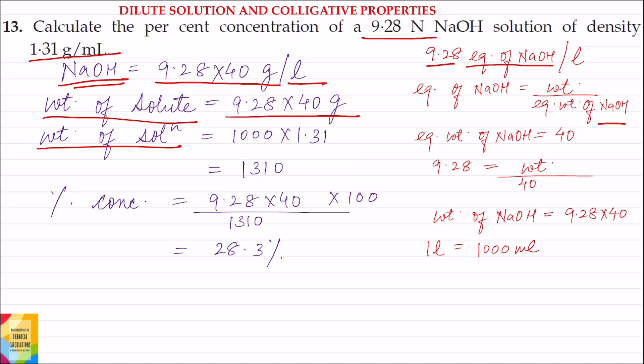So weight of solution ho jayega volume into density. Weight of solution is equal to volume of solution, that is 1000 milliliter, into density of solution, that is 1.31 gram per milliliter. Volume ko liter se milliliter mein convert kiya because density is given in gram per milliliter, so the unit of volume must also be in milliliter. So 1000 into 1.31 gives weight of solution as 1310 grams.